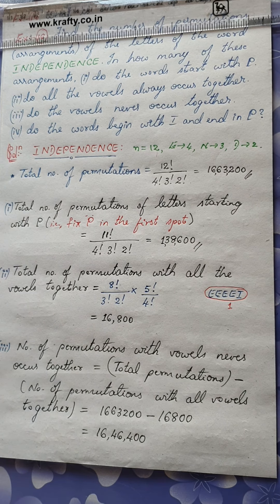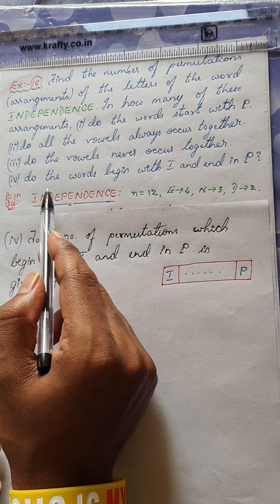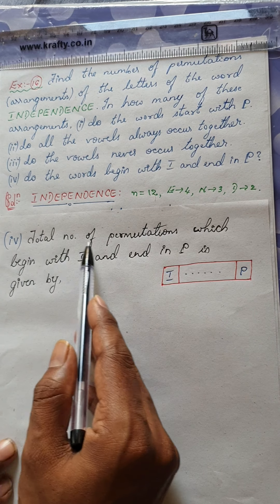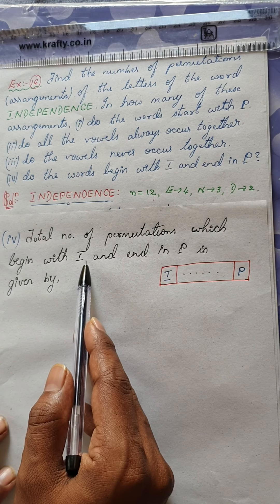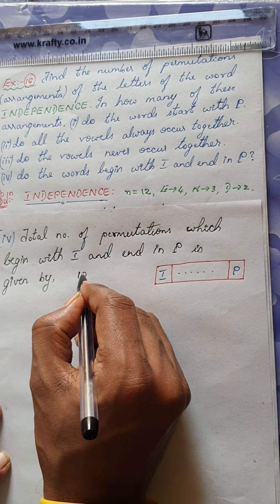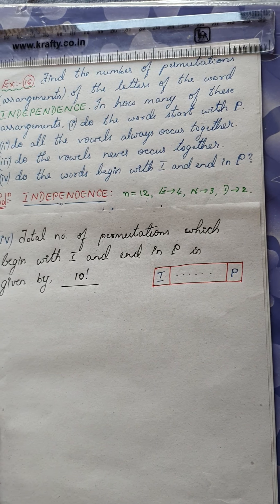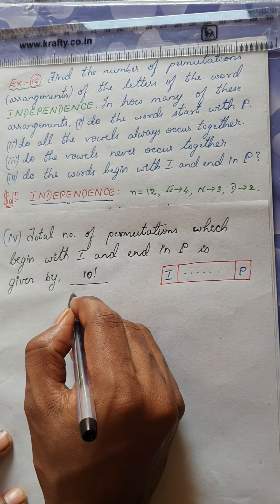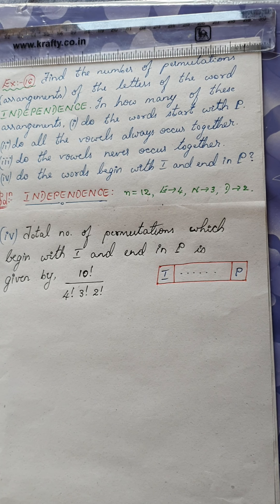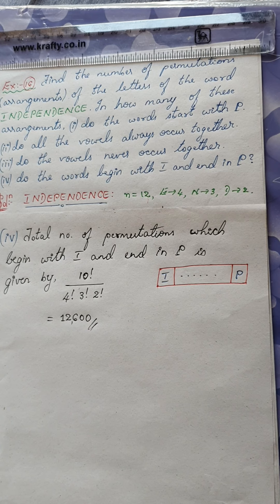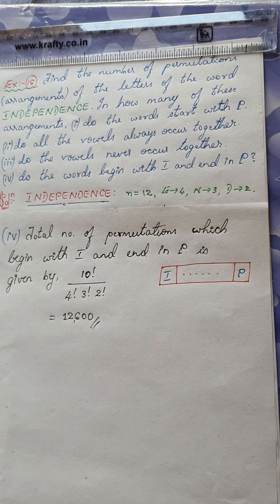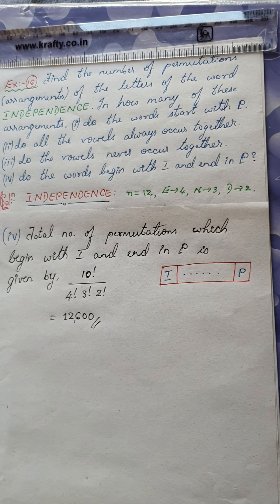The last condition — words begin with I and end with P — fix I in the first spot and P in the last spot. Only 10 letters remain for arrangement. E is repeated 4 times, N 3 times, D 2 times. Total permutations = 10! / (4! × 3! × 2!) = 12,600 ways. All four conditions are done.